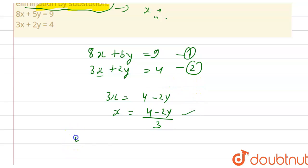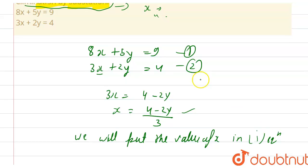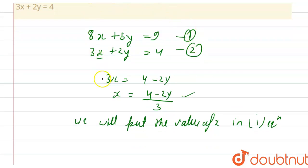Now we will put the value of x in the first equation. If I put the value of x in the first equation I will get 8 into 4 minus 2y divided by 3 plus 5y equals 9.